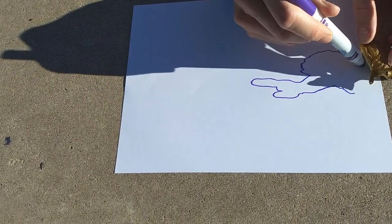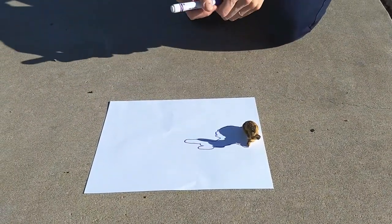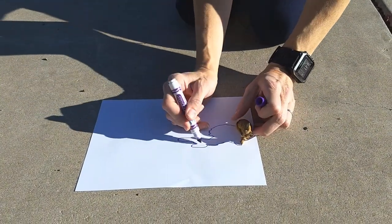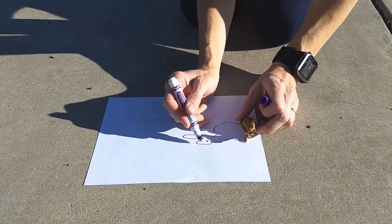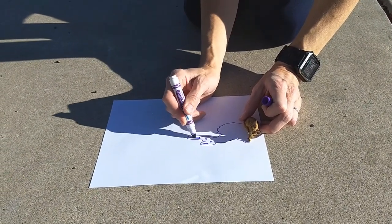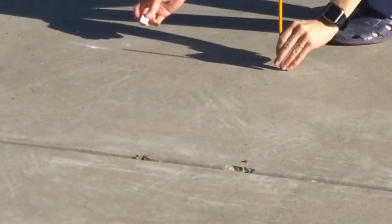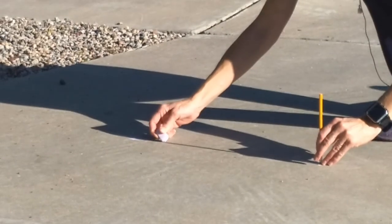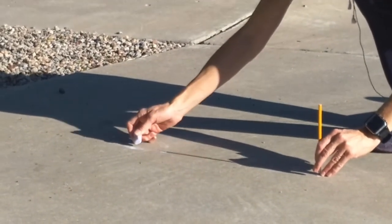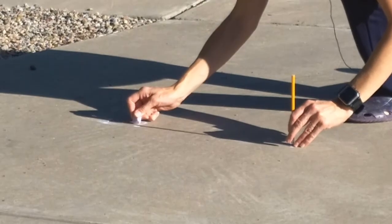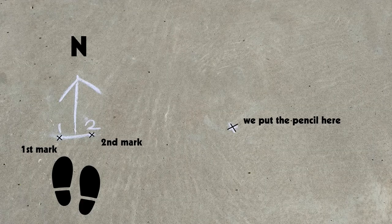If the sun's not working for you, you can also use a lamp inside. Just put the lamp where it makes a nice shadow on your paper and trace the shadow. You can decorate your shadow if you want, but I want you to notice what's the difference between the shadow you traced and the original object — what things are the same and what things are different. Then go back to your stick or pencil and make another marking where its shadow is now. To find north, put your left foot on your first shadow marking, put your right foot on your second shadow marking, and then you will be facing north. Stay safe, have fun, and keep observing.